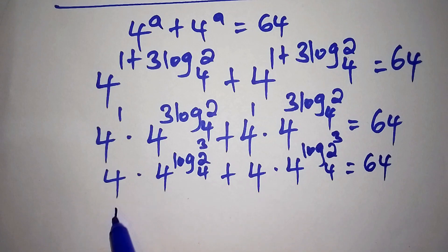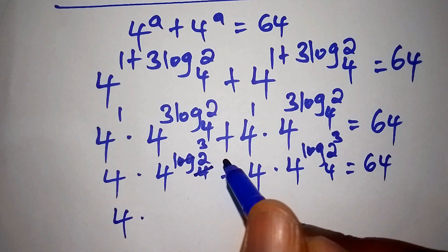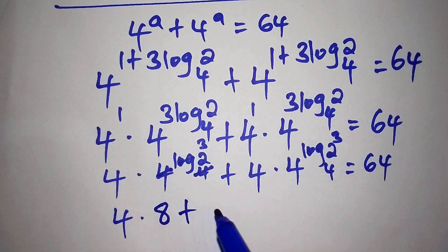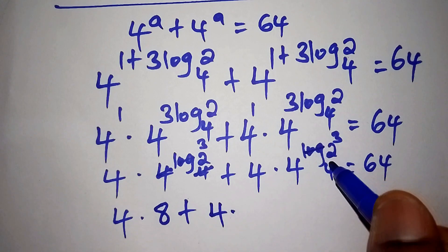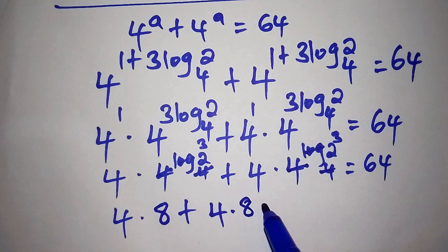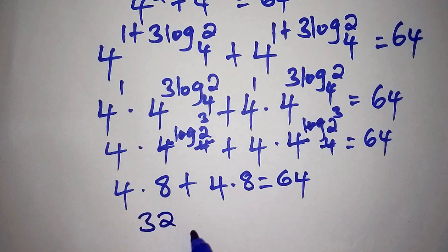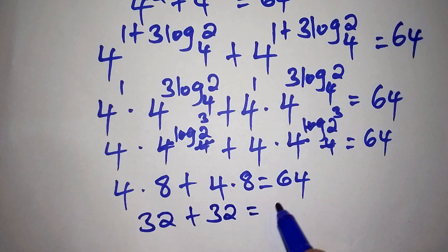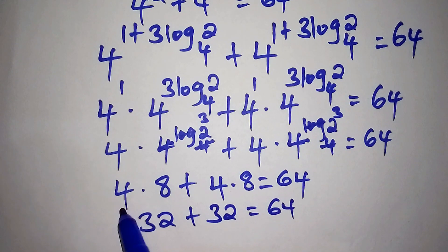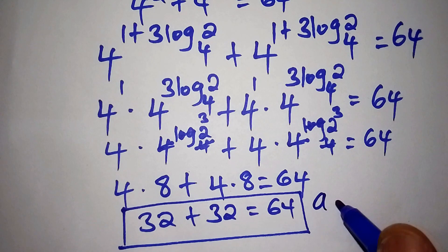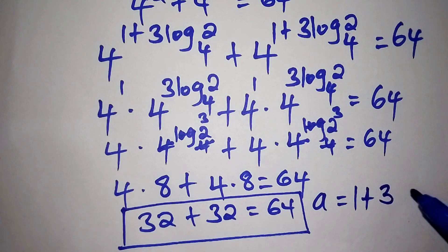So now 4 multiplied by 8 is 32, plus 4 multiplied by 8 is 32, equals 64. So 32 plus 32 is 64, which means our answer is correct. We conclude that the value for a is equals to 1 plus 3 times the log of 2 to the base of 4.